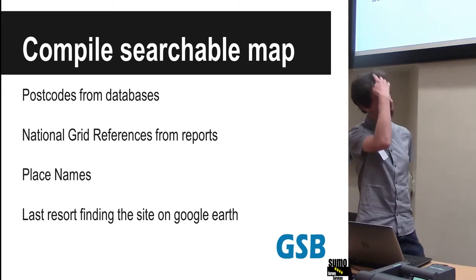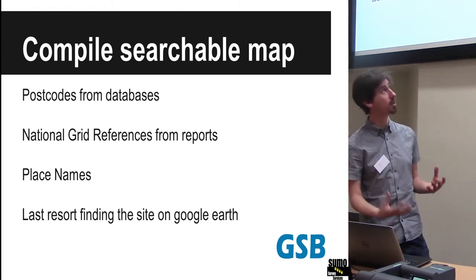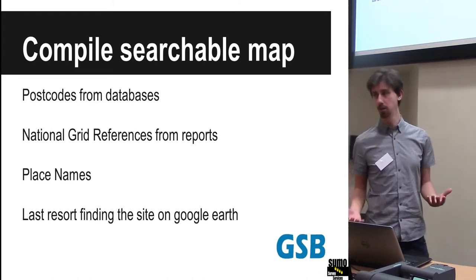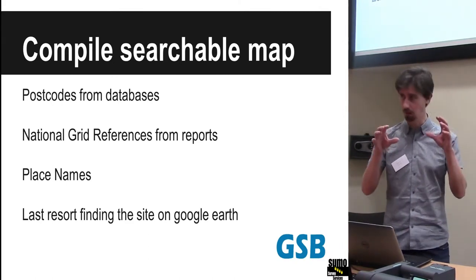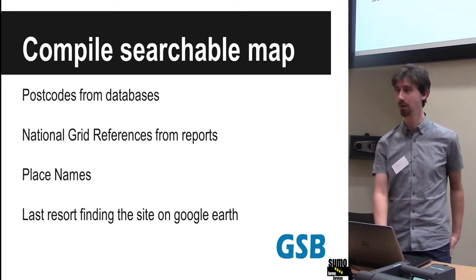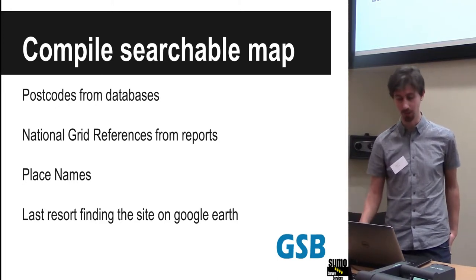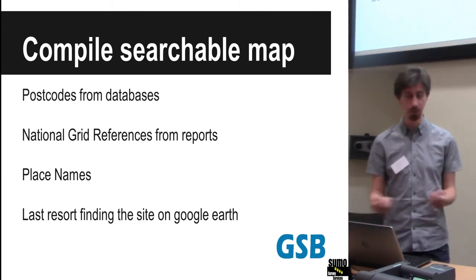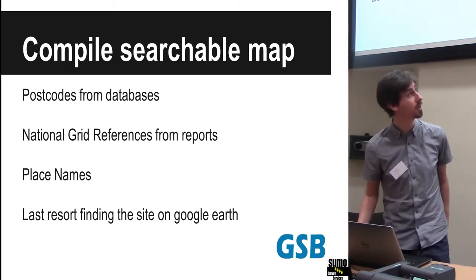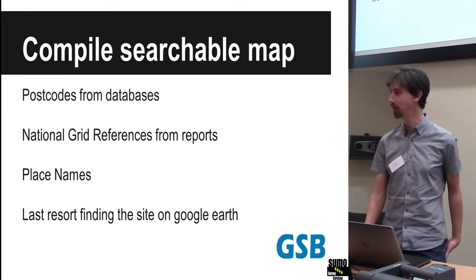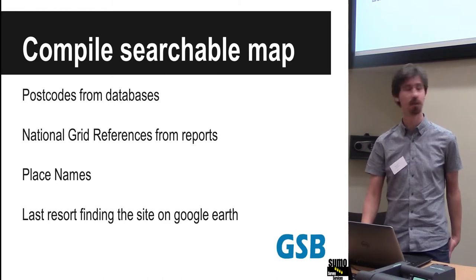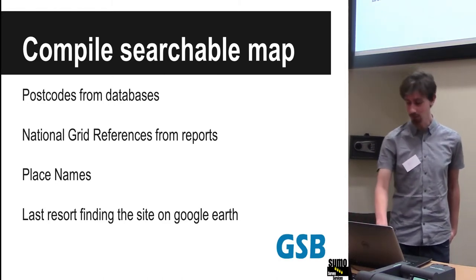One of the parts we've actually managed to start working on is compiling a searchable map. Because we've got databases of where all our surveys were, we're extracting postcodes, grid references from reports, and place names, in order to put all 3,000 projects onto a map showing where the projects are. The last resort is finding sites on Google Earth. I began this quite a few years ago before Finn started, going through the oldest reports, opening them up, looking at a map, finding them, and putting a pin on a Google map — very time consuming. When Finn joined, he saw what I was doing, said 'why don't you write some code for that?' He went away for a couple of days, wrote some code, extracted all the data, and probably did about five times as much as me in about an hour as I had done in the previous two years — which is both good and highly frustrating.